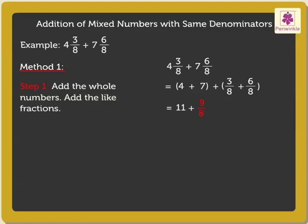The fraction obtained is an improper fraction, so we further convert it into a mixed number. This gives 11 plus 1 and 1/8, which is equal to 12 and 1/8.